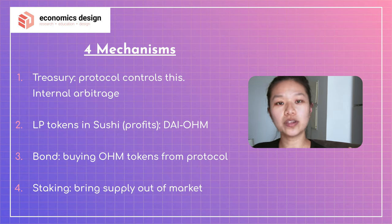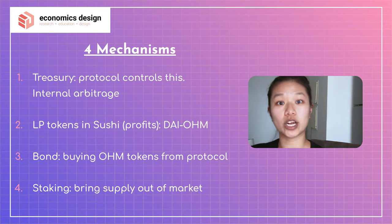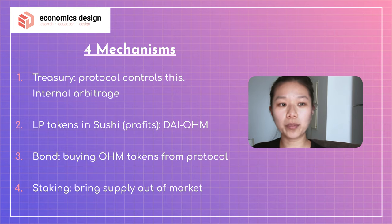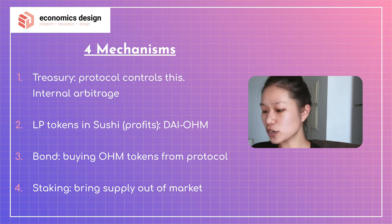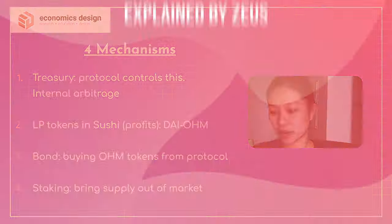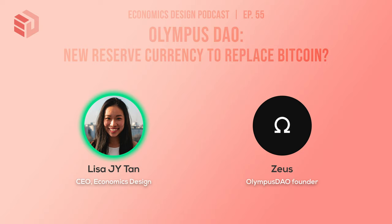The second mechanism is LP tokens. Other than using your OHM tokens for bonding and staking, you can deposit them together with DAI into a DAI-OHM pool on SushiSwap, and with those LP tokens you can sell them to the treasury which manages all of that. Third, you can bond the system — buy OHM tokens from the protocol and bond them. Fourth is staking, which is for a longer period of time. Bonding is more active management; staking is passive management where you put OHM there, remove supply out of the market, and earn OHM tokens.